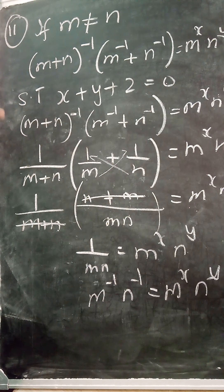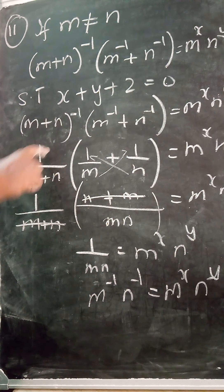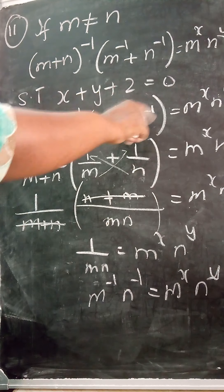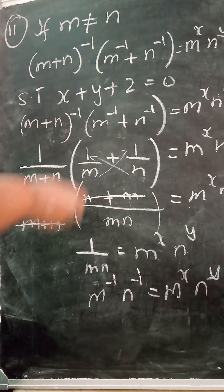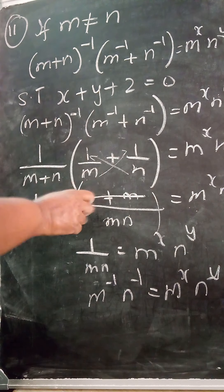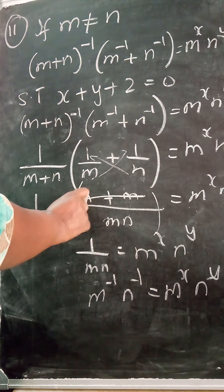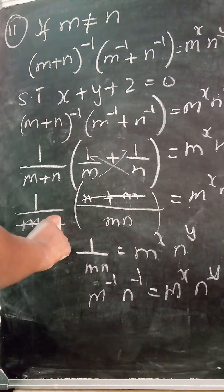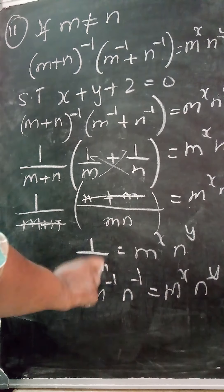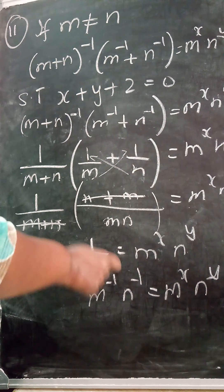Let me explain again: (m+n)^(-1) becomes 1/(m+n). Then 1/m + 1/n with LCM mn becomes (n+m)/(mn). The (m+n) and (n+m) cancel, leaving 1/(mn) = m^x · n^y. Taking the denominator up, m^(-1) · n^(-1) = m^x · n^y, so x = -1 and y = -1.